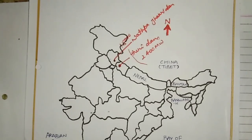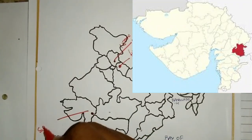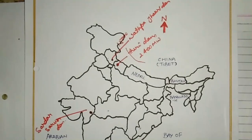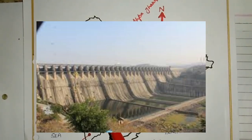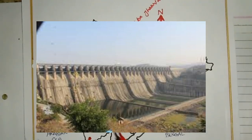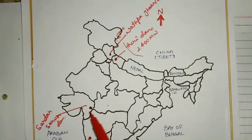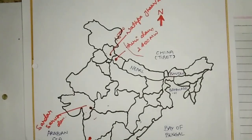The fifth one is the Sardar Sarovar Dam, located in Gujarat. This dam serves Gujarat and Maharashtra and produces around 1,000 megawatts of electricity.